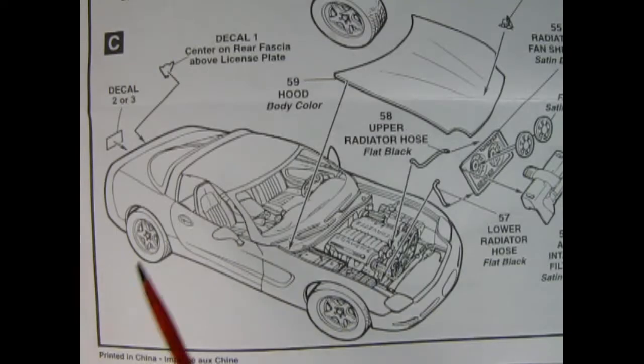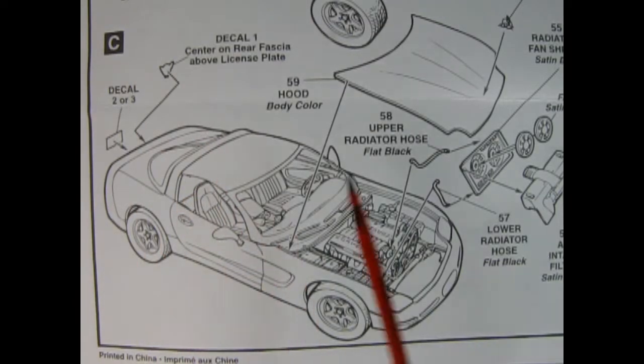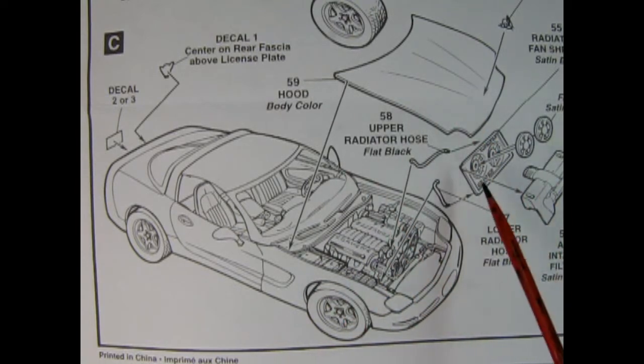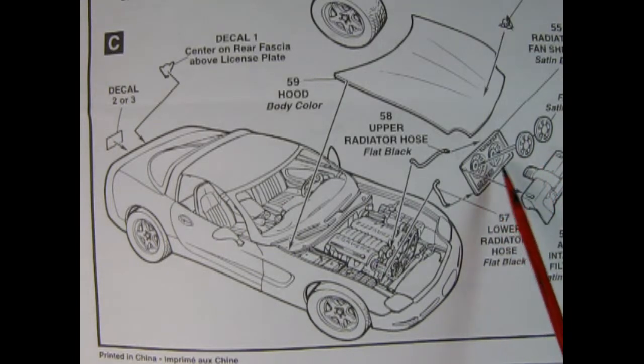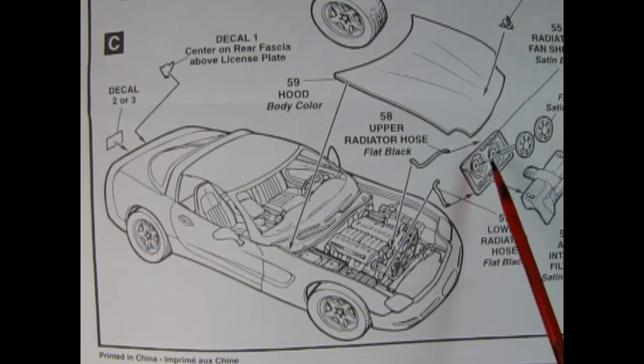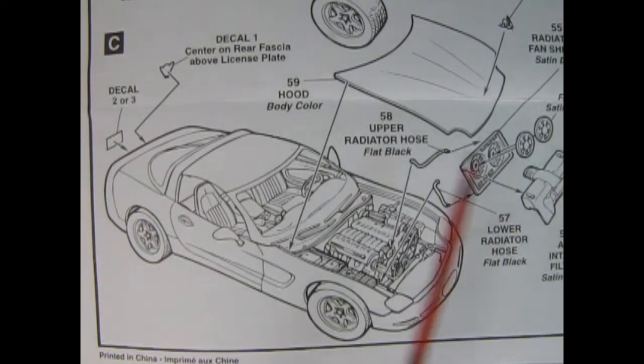Panel B shows our body being dropped down onto our assembled chassis engine and interior, and then you glue your wheels on in all four corners. Panel C shows some of our decals being put in place and here we also drop down our hood. There's our complete radiator assembly as well as the air intake with two fans, the radiator fan shroud, upper and lower radiator hoses. Once all this is complete you'll have a really nice looking fifth generation Corvette.